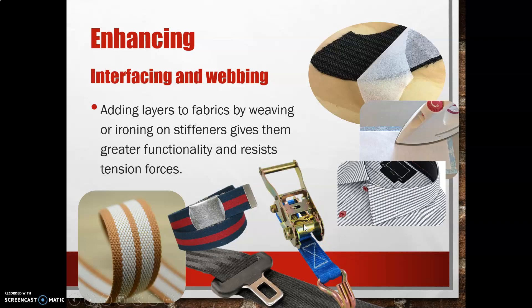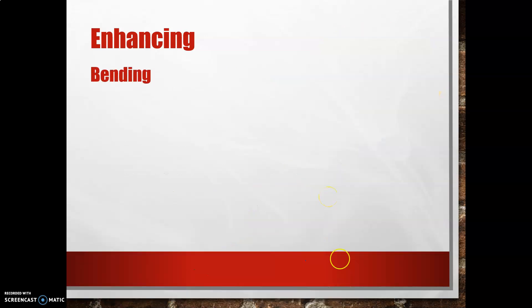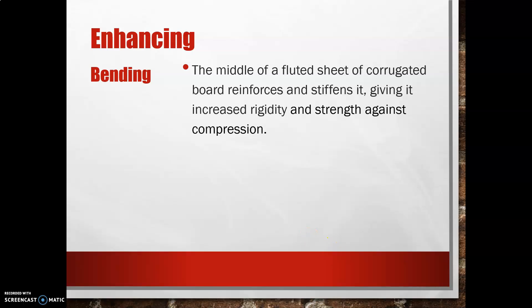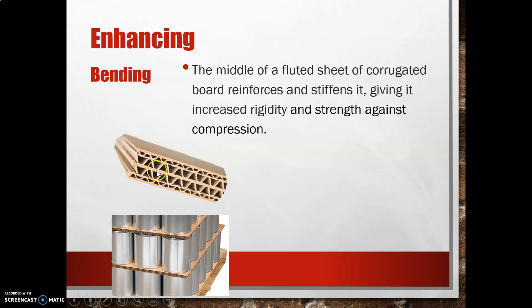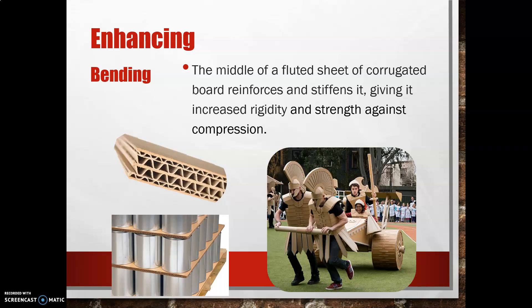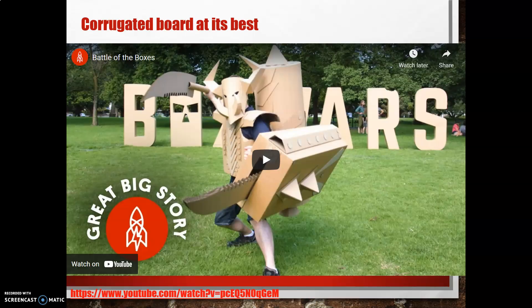Cars and cargo are transported all over the world using ratchets connected to fabric straps. We can also enhance materials by bending — for instance, the middle of a fluted sheet of corrugated board reinforces and stiffens it, giving increased rigidity and strength against compression. Some corrugated boards have multiple layers for really big boxes. Here's a nice example full of paint cans — amazing how much weight it can hold. And I'm going to show you a video of box wars, which happens every year in Australia, where people construct all sorts of weaponry from corrugated board.